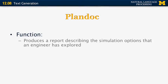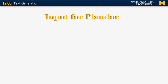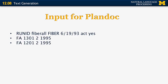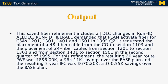One more example of a generation system is one developed at Columbia University and Bellcore in the 90s. Its goal was to produce reports describing different simulation options that an engineer laying cables in a telephone system has already explored. The input is a simulation log file — a specific run ID, cable type, location, date, and placement details — and all of those get collapsed into one output, such as: 'This saved fiber refinement includes all DLC changes... Run ID fiber demanded that plan activate fiber for CSAs 1201, 1301, and so on in the second quarter of 95. It requested the placement of a 48-fiber cable from the CO to Section 1103.'